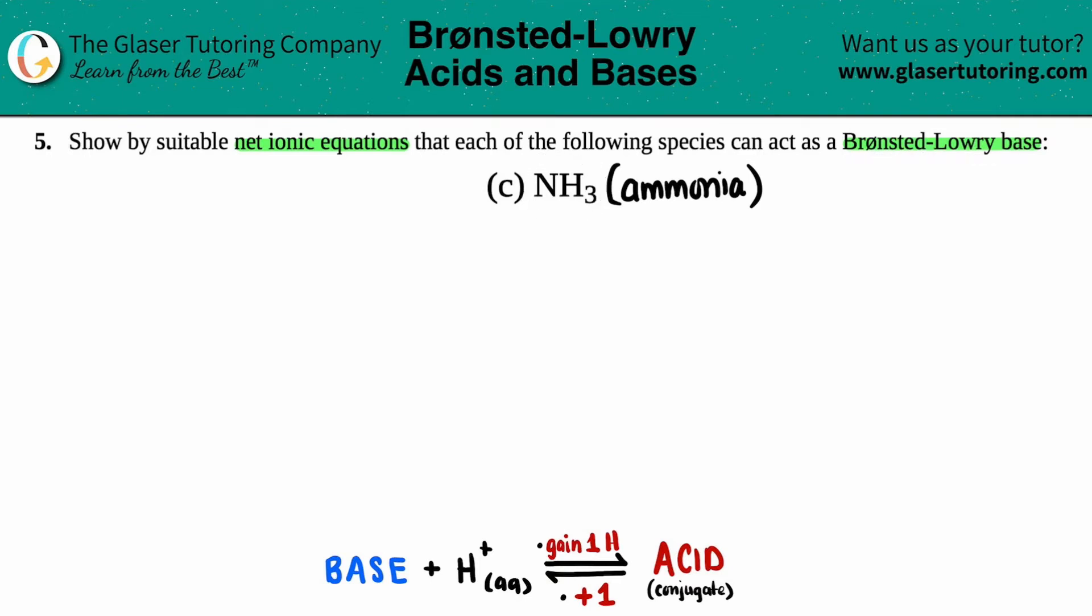Now back in the day, there were two scientists, Bronsted and Lowry, who both came up with the same idea and they did not know about each other. It was independent. Crazy. But anyway, these two scientists came up with the idea of acids and bases.